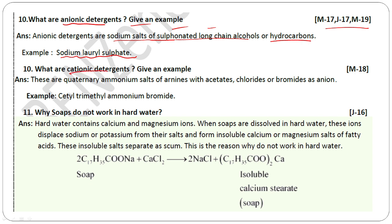What are cationic detergents? Give an example. Anionic detergents are sulfonated salts, whereas cationic detergents are quaternary ammonium salts of amides with acetates, chlorides, or bromides as the anion. The example of a cationic detergent is cetyl trimethyl ammonium bromide.